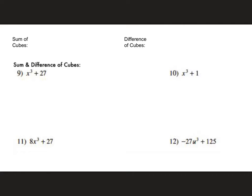The difference of cubes is a unique one that doesn't get a lot of airplay. Here's the formula: the sum of cubes is when you have something raised to the third power plus another something raised to the third power. Once you identify those two values (a and b), you drop them into the formula: (a + b)(a² − ab + b²).